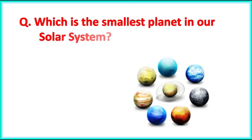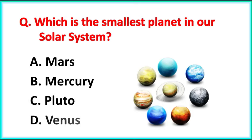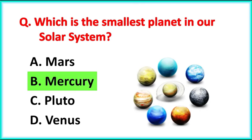Which is the smallest planet in our solar system? The correct answer is Option B. Mercury.